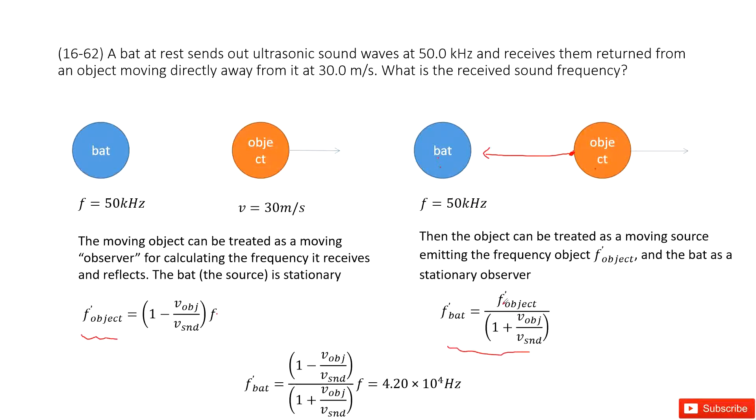So this frequency produced by the object is f_object_plus. And this is the frequency the bat received, f_bat_plus. And use this equation. Now we need to combine these two equations together.